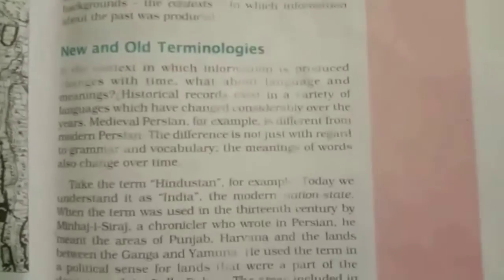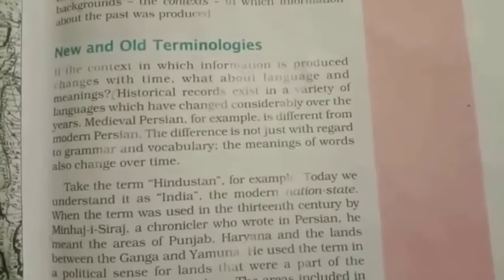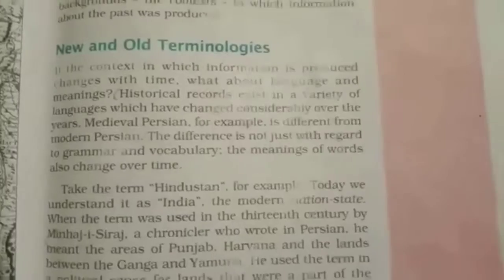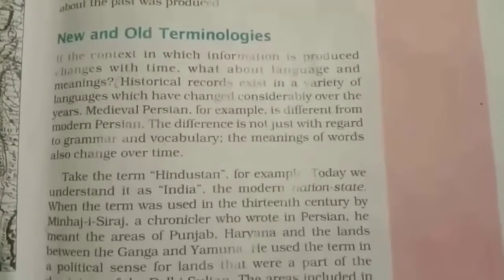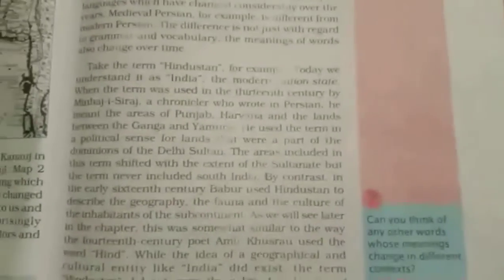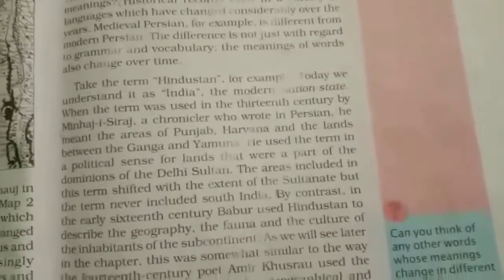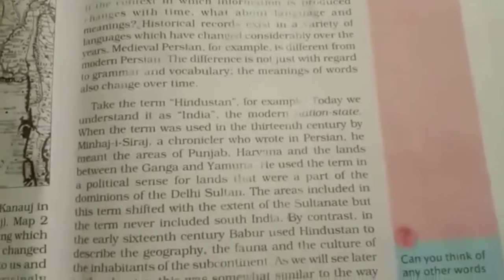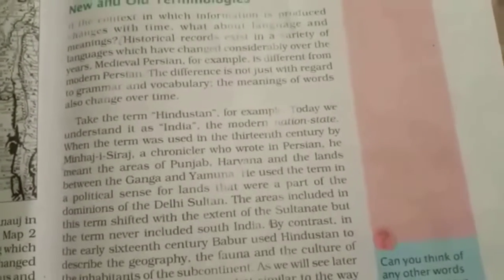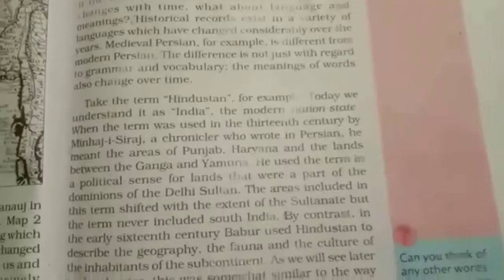Now we come to the next paragraph on old terminology. Historical records exist in a variety of languages which have changed over the years. Minhaj-i-Siraj described Hindustan as the area covering Punjab, Haryana and the land between the Ganga and Yamuna rivers.